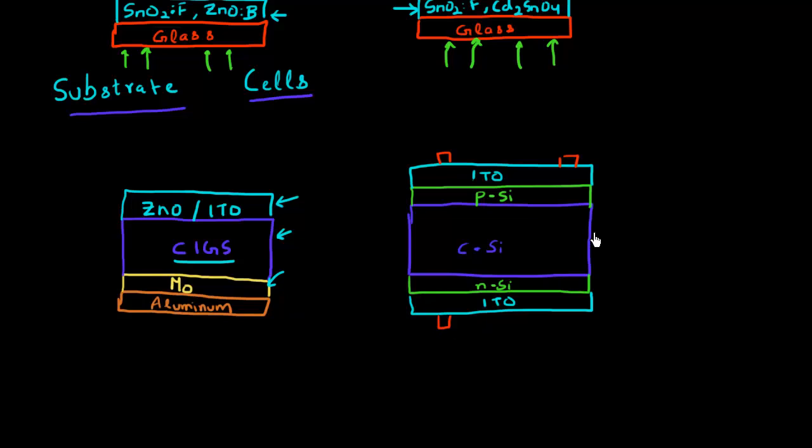I'm showing over here this HIT design, which is a crystalline silicon based solar cell. But the contacts over here are made of this amorphous material. Since the resistivity of this amorphous silicon material is low, usually people use a TCO material on top of this amorphous silicon.